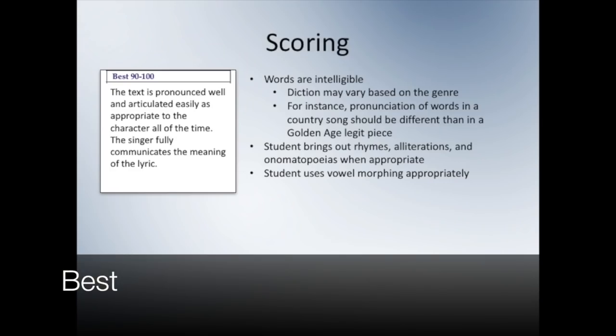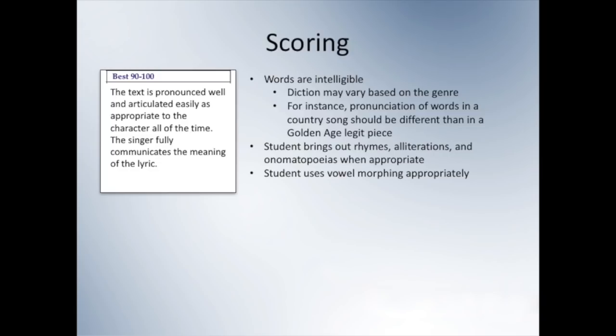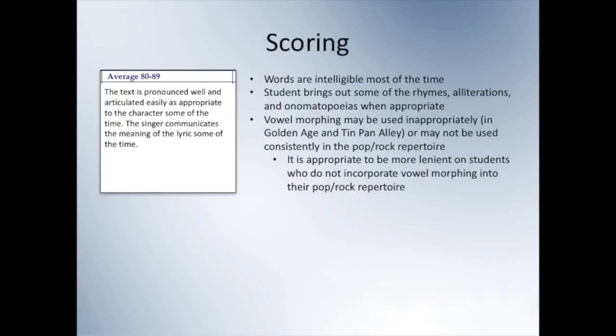Here are some things to consider when judging the diction category on the NATS rubric. In order to earn a score of Best, the text should be pronounced well and articulated easily as appropriate to the character all of the time. The singer should fully communicate the meanings of the lyrics. Words should be intelligible; diction may vary based on genre — pronunciation in a country song should be different than in a golden age legit piece. Students should bring out rhymes, alliterations, and onomatopoeias when appropriate, and use vowel modification appropriately in pop rock genres. Students who are somewhat inconsistent in their diction are more likely to receive an average rating — words are intelligible most of the time but not all the time, rhymes and alliterations brought out sometimes but not always, and vowel modification may be used inappropriately in a golden age or Tin Pan Alley song, or not used consistently in pop rock material.